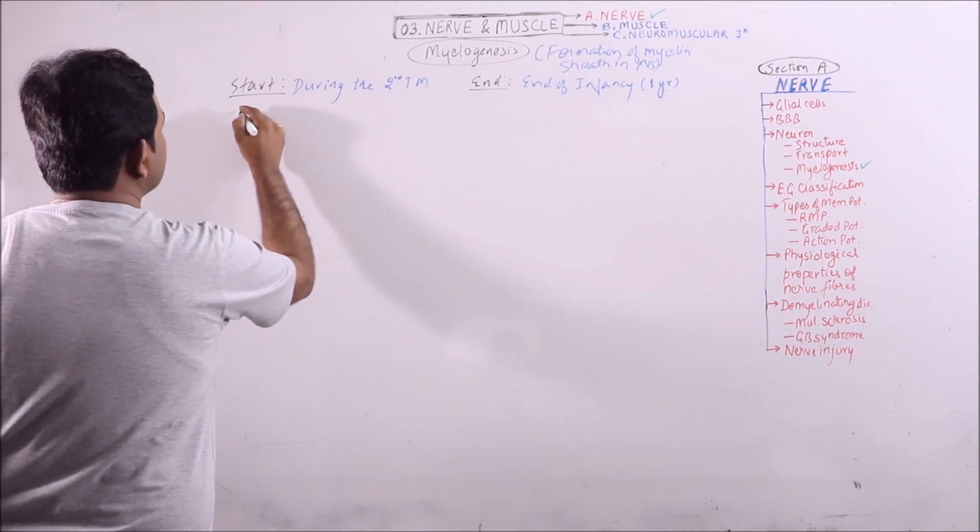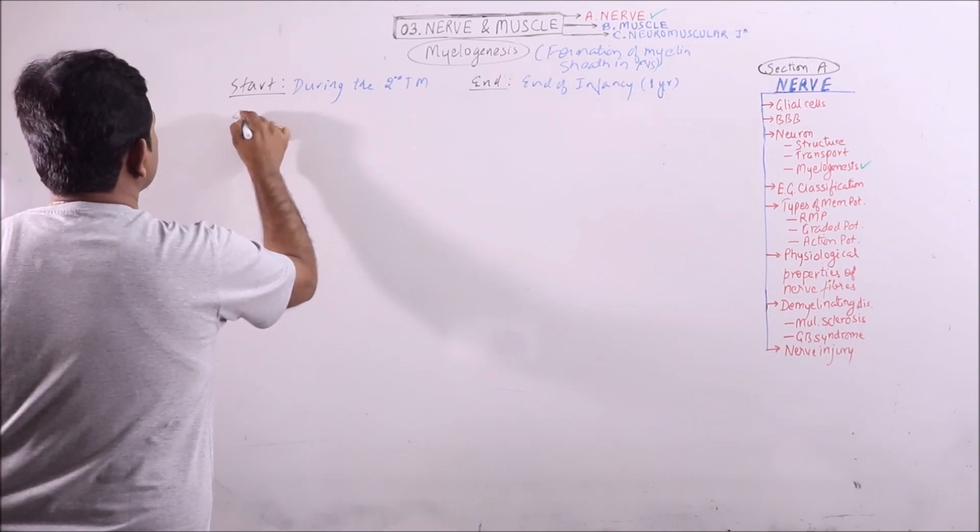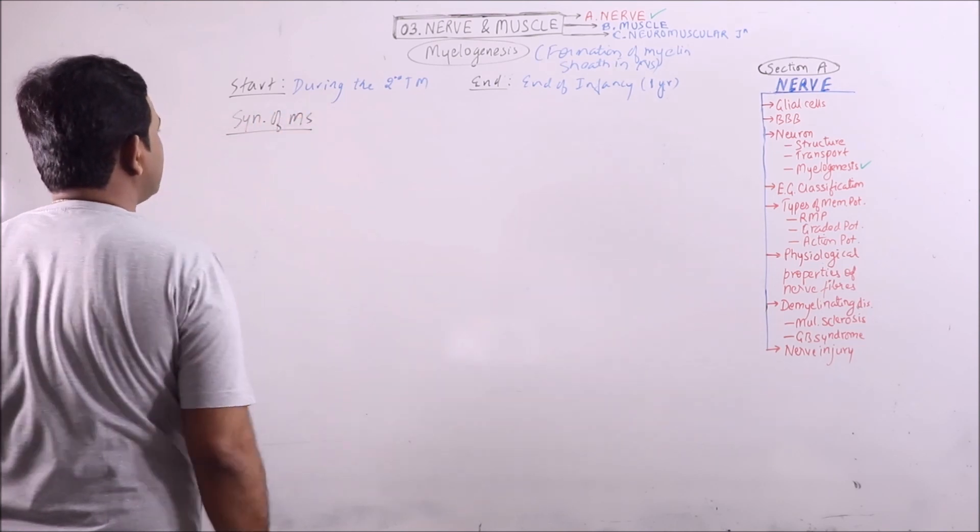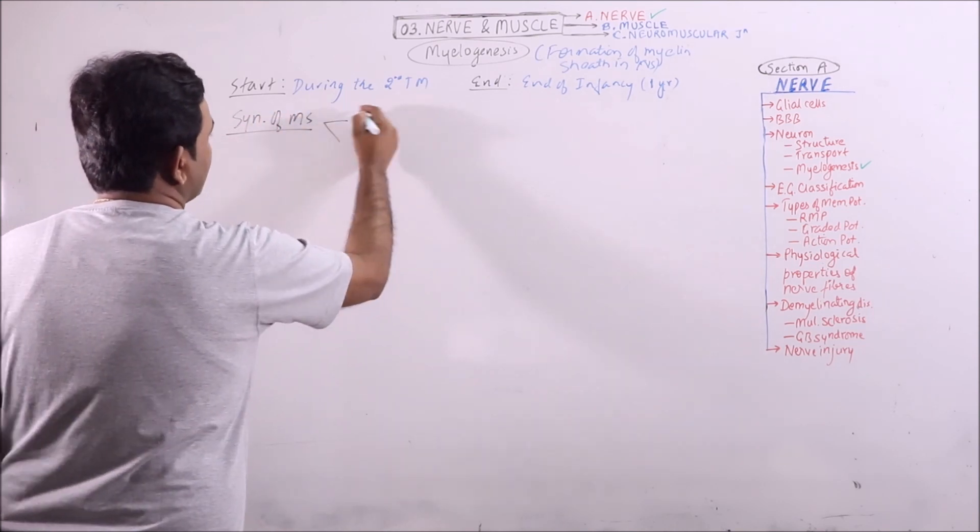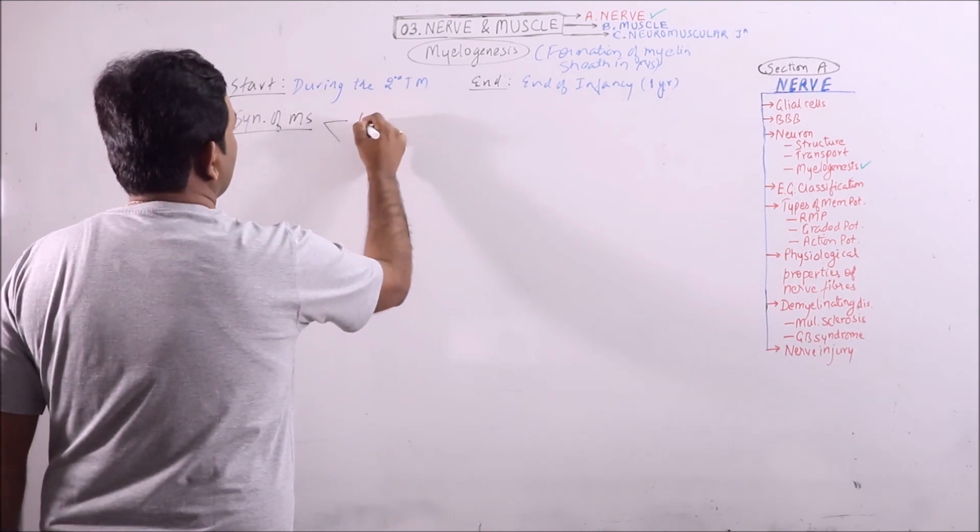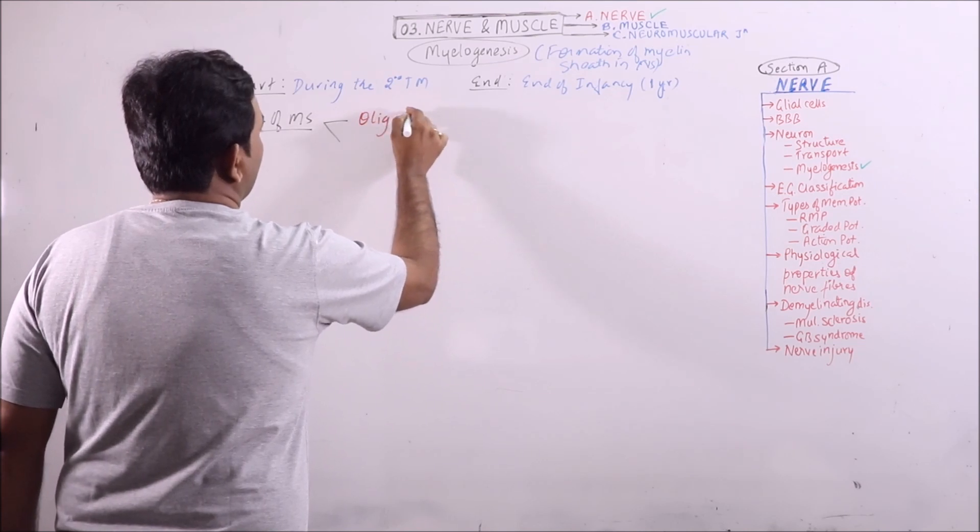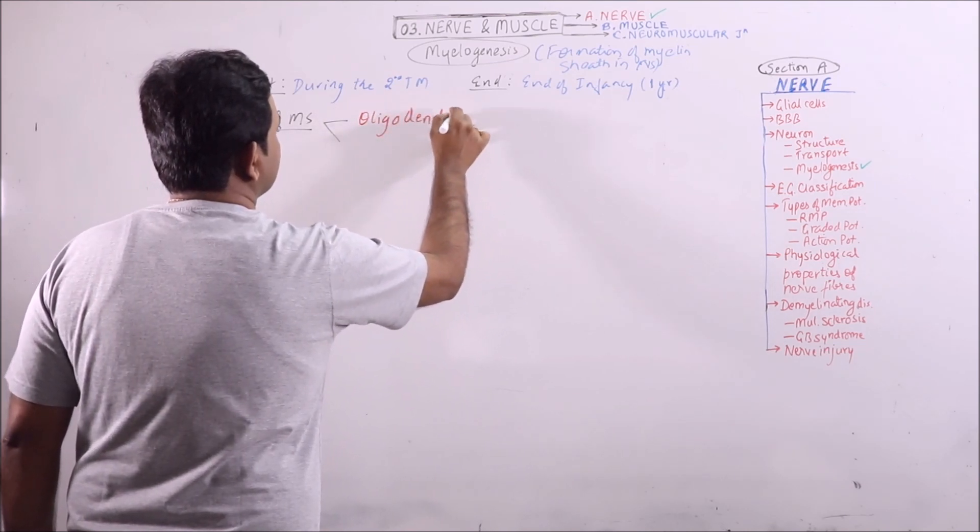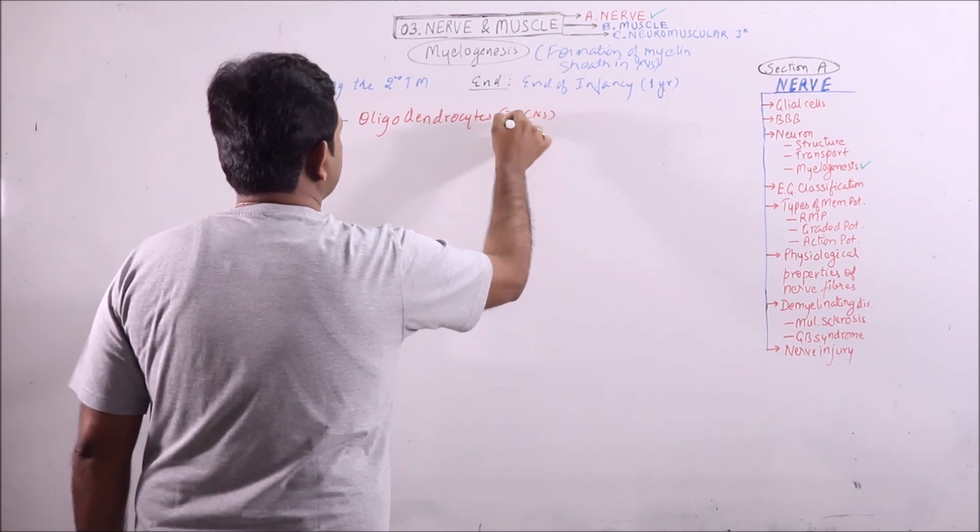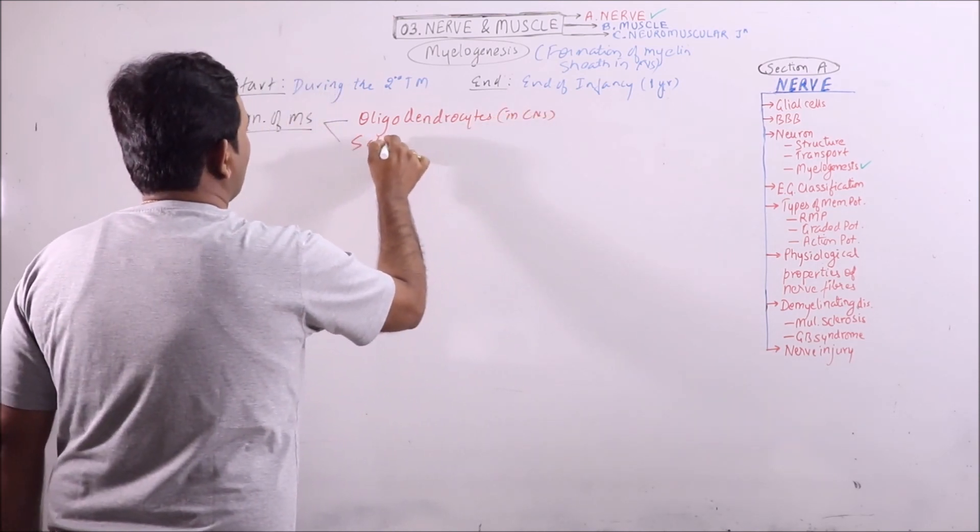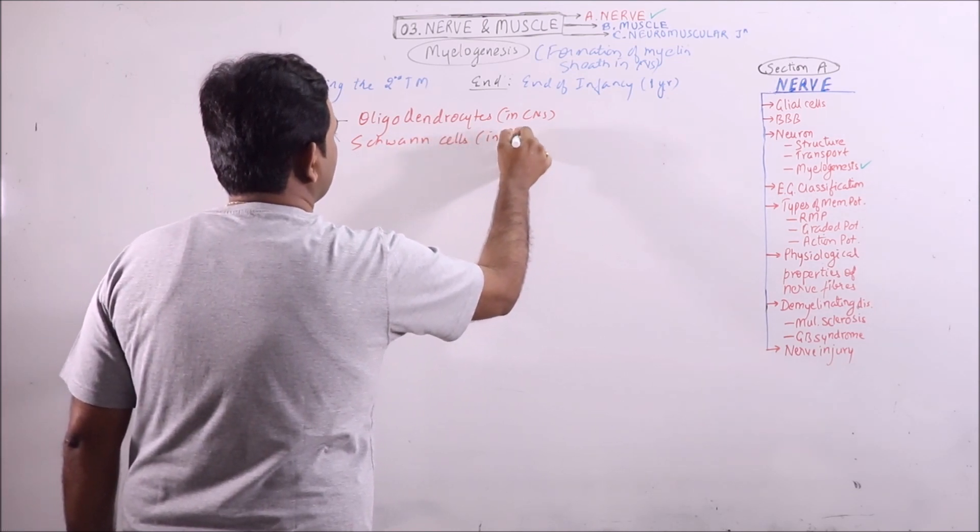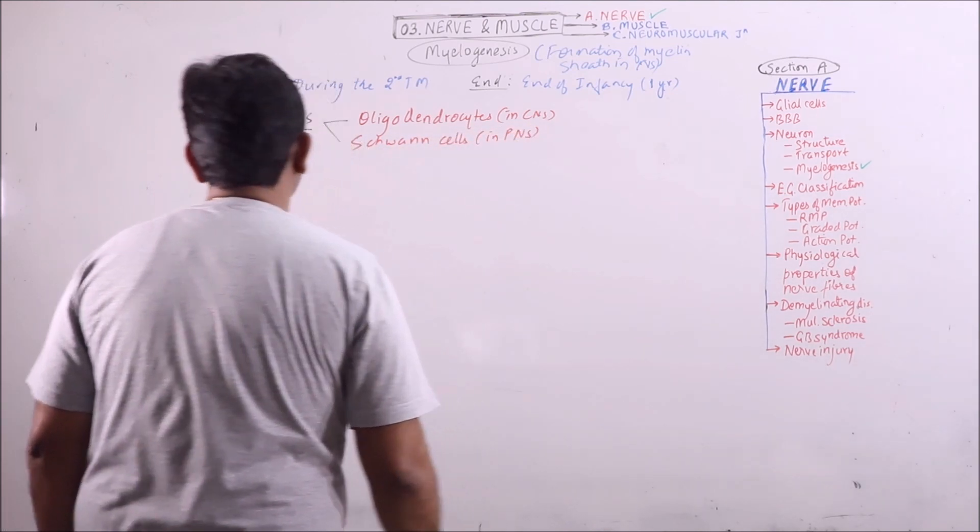Who performs the myelogenesis, that is synthesis of myelin sheath. Oligodendrocytes in CNS or Schwann cells in peripheral nervous system.